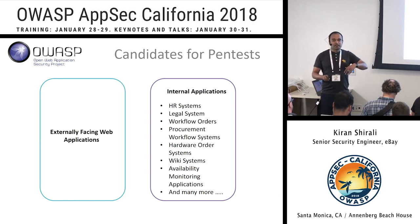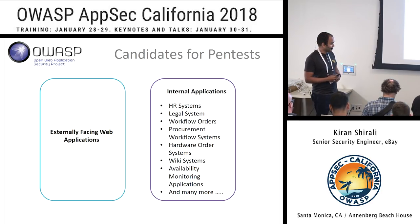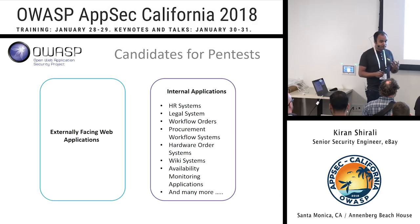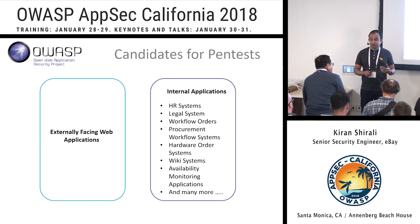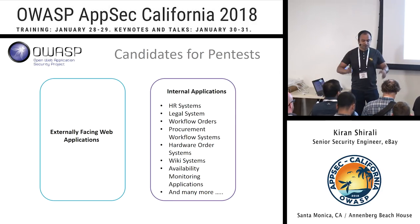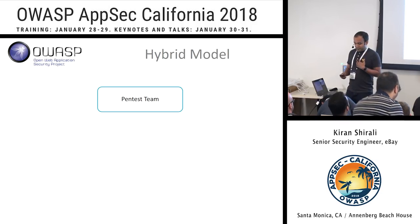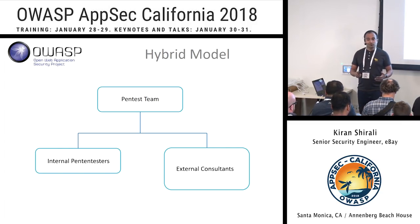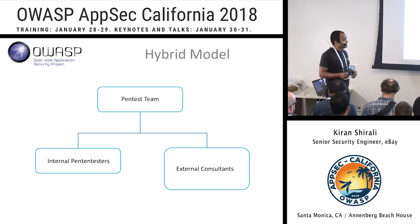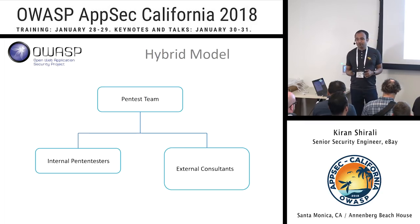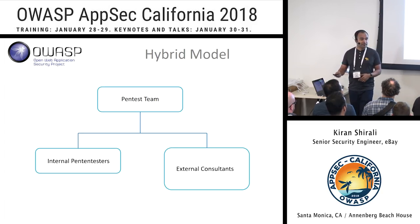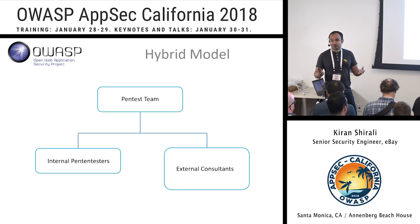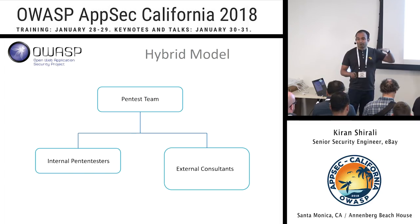Externally facing is anything like eBay.com — what you probably see on the net when you come to purchase something. Internal applications, on the other hand, are not discoverable outside. There may be HR systems, monitoring systems, systems built by our engineers, because we give them a lot of flexibility to automate some of the stuff they're doing. Our pen test team has two components: internal pen testers and external consultants that we engage. We follow this hybrid model primarily for our ability to flex up and flex down. There are times in a month when you have 10 or 12 pen tests going on in parallel, sometimes just a few scoping calls, so it helps us manage our resources more effectively.